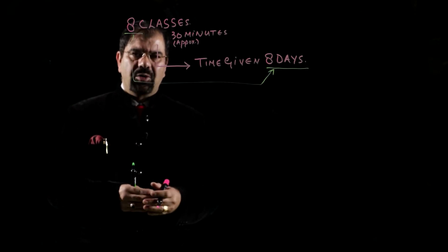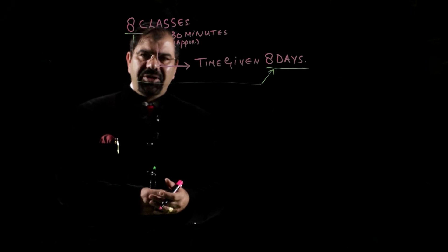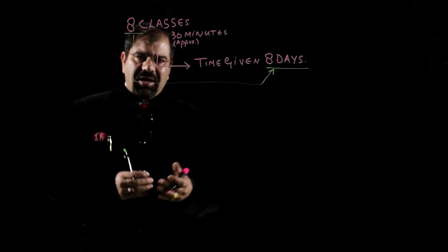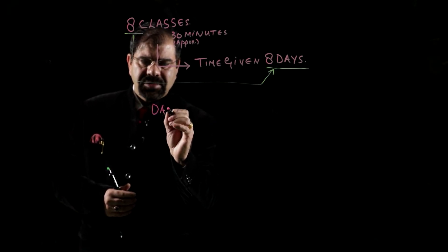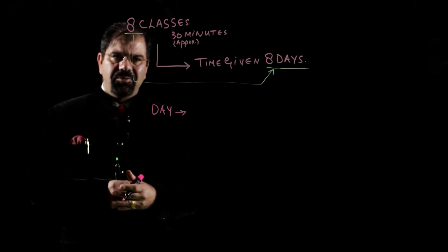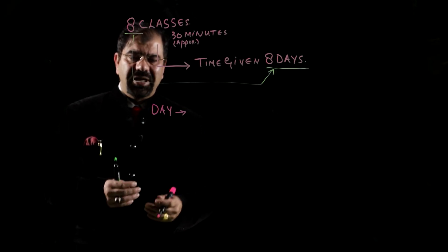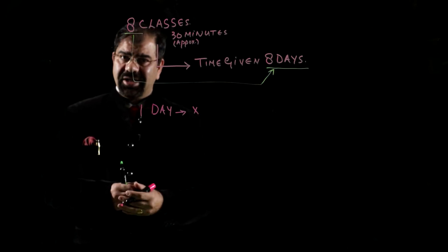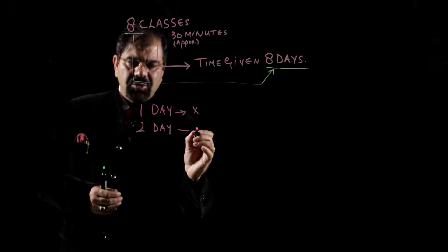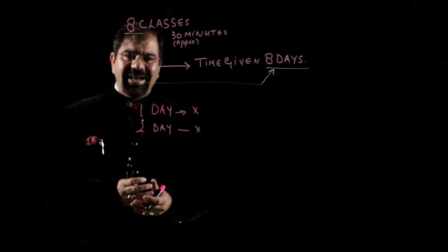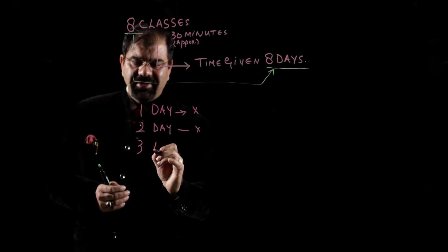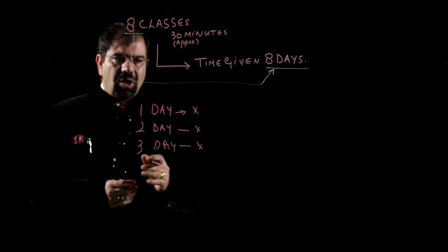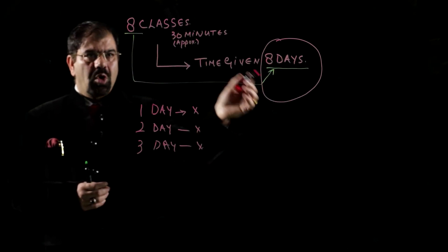For example, you have registered for a course and you are supposed to watch one video per day. But we know that we are dealing with professionals — you may get an emergency or have some work and skip the first day. Let us assume you registered today and due to any emergency, you cannot watch today's video. Day one you have not watched — but it does not mean you will not get the video of the first day. Even if you do not watch on the second or third day, no problem, because you have eight days to watch the eight classes.